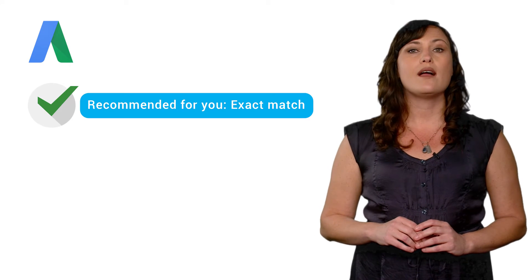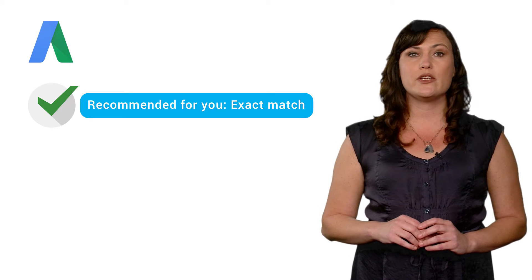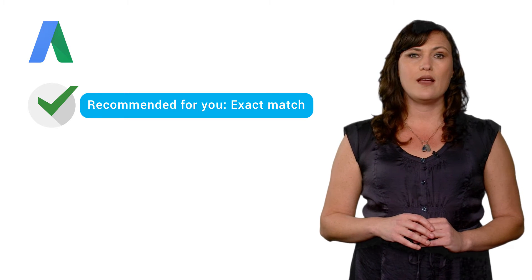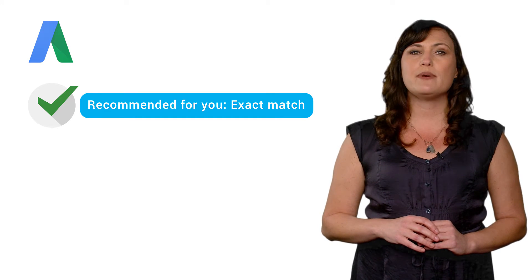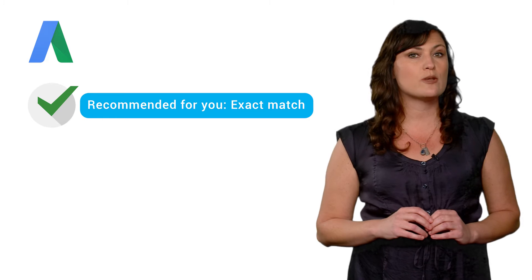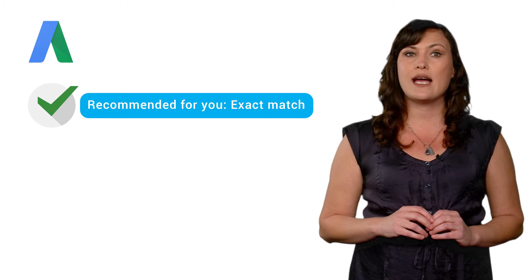You want your ads to have the most precise reach, so they'll be able to show only when someone searches for your exact keyword without any other terms in the search. That means you'll want to use the exact match option for these keywords. This option is best used when you know exactly what search terms you want to trigger your ads to show.